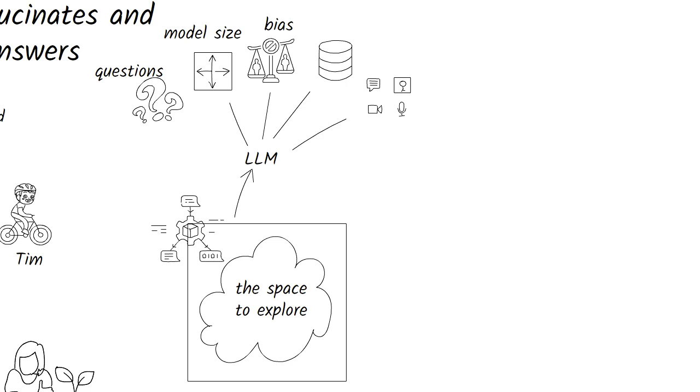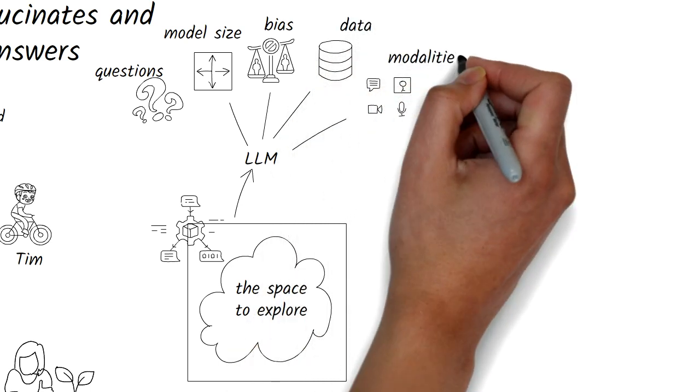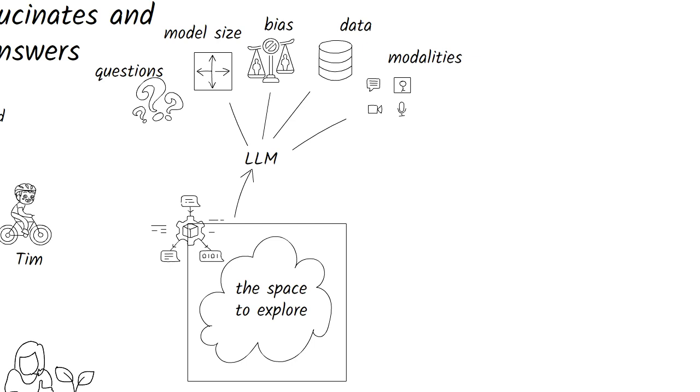The biases in the data matter. The size and accuracy of the data matters. The modality of the data, whether it was visual, text, audio, and so on, matters. Much like the different experiences, knowledge, and biases of people.